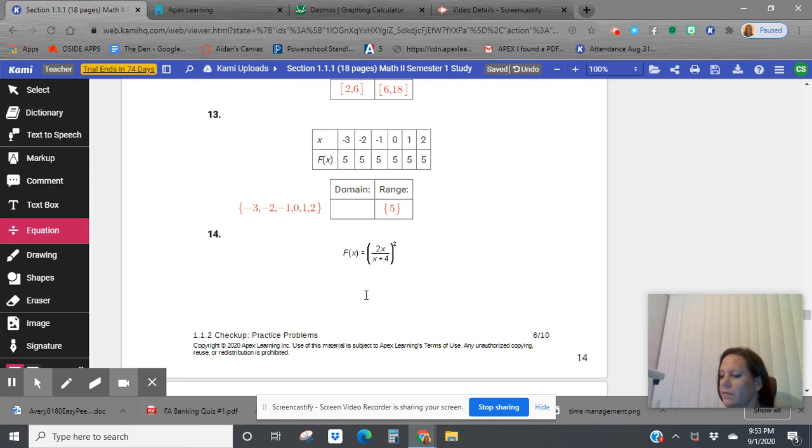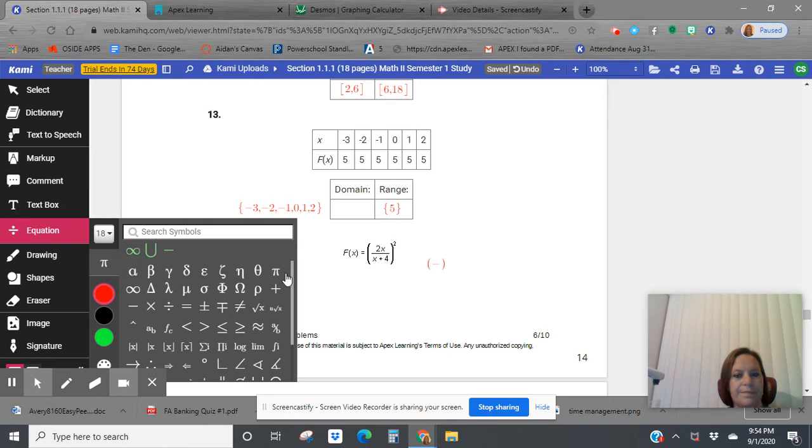So number 14, this is really like a higher level one that we're just being exposed to with this idea of down here there being some excluded number. So we want to say that all real numbers except x cannot equal negative four on this one. So how would I say that in interval notation? I'm going to say from negative infinity to negative four and then union from negative four to infinity.